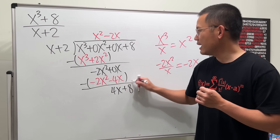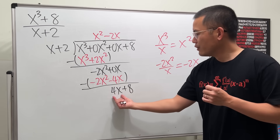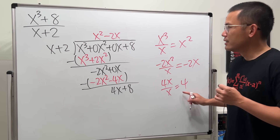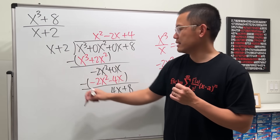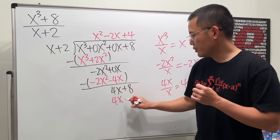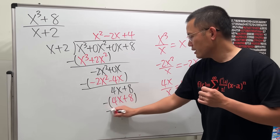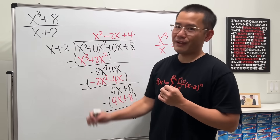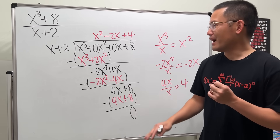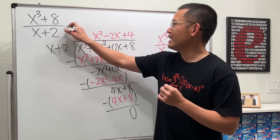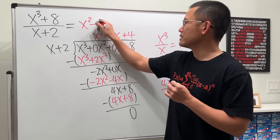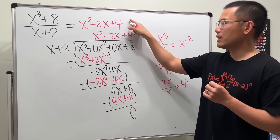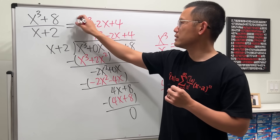Bring down the plus 8. 4x divided by x is 4, so plus 4. 4 times x is 4x, and 4 times 2 is 8. Subtract — in this case the remainder is 0 because the numerator is factorable with a factor of x + 2. So the answer is simply x² - 2x + 4. If the remainder is 0, you don't need to add anything.